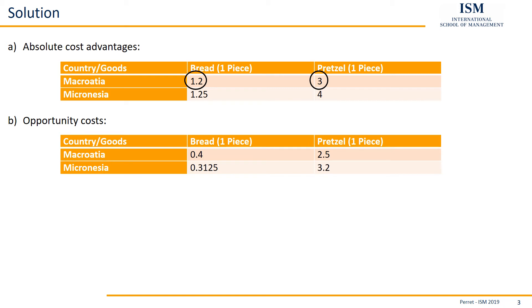Knowing this, we can directly look at each of the two goods and ask: who has the lowest opportunity costs? For bread, that's Micronesia. For pretzels, that's Micronesia as well — the values are correspondingly smaller than the others.